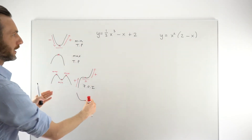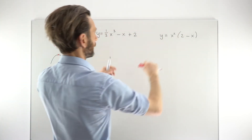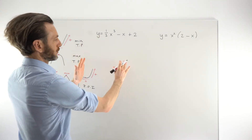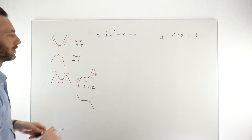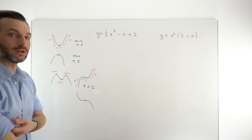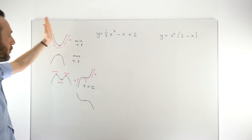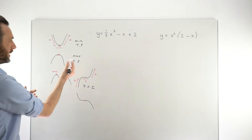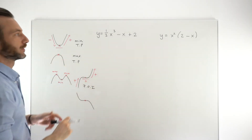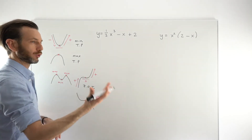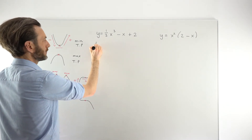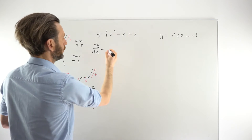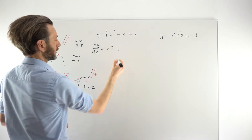We're going to find the stationary points of these functions and then determine which type of stationary point we've got. The algebraic process doesn't really give us information about the type, so we need to develop a method. One way is to make a mini rough sketch of the graph. But regardless of the method, we need to start by taking the derivative. Using the power rule for this polynomial, we get dy/dx equals x squared minus 1.